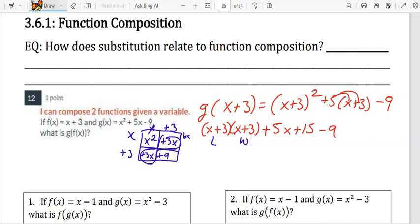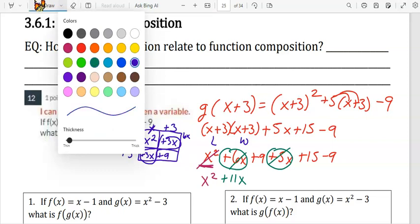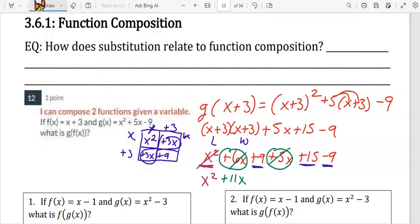So we're going to write x² + 6x + 9 + 5x + 15 - 9. Combine like terms. This is the only x² term, so we just write that. From there, we're going to combine all the x terms. 6x + 5x is 11x. And then we'll combine the constants. The 9 and the -9 cancel out, and you're just left with 15.